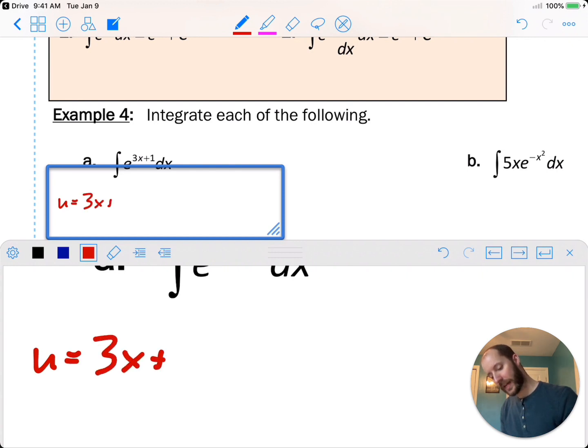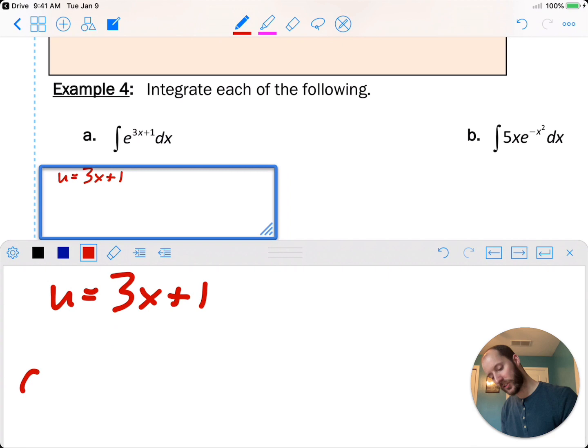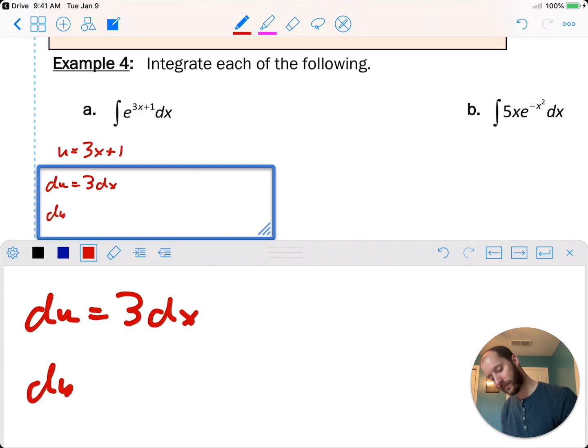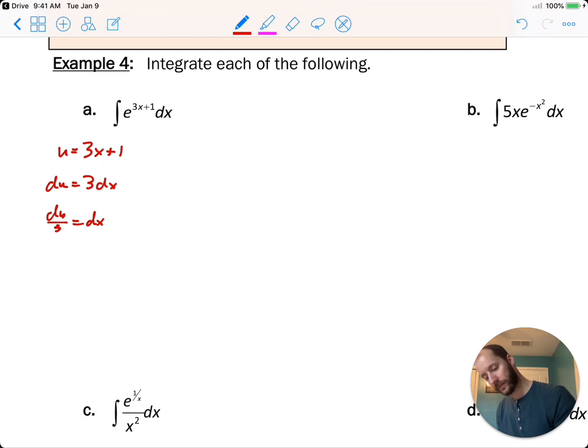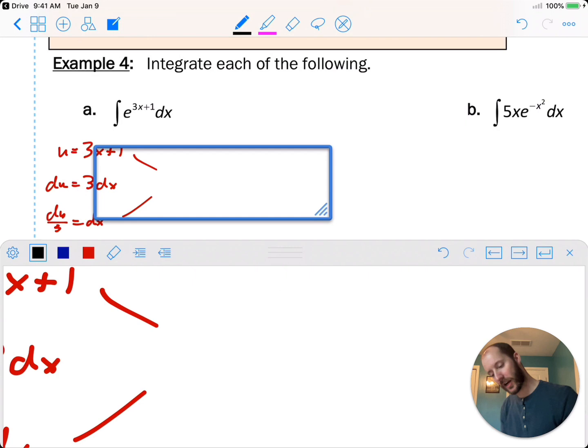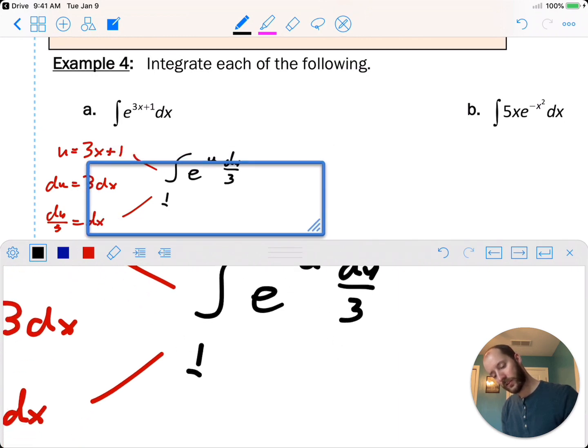So we'll go ahead and use that u substitution. So du equals 3 dx. Du over 3 equals dx. Then go ahead and make our new integral problem. e to the u, du over 3. So pull that denominator 3 out of the front. e to the u, du.